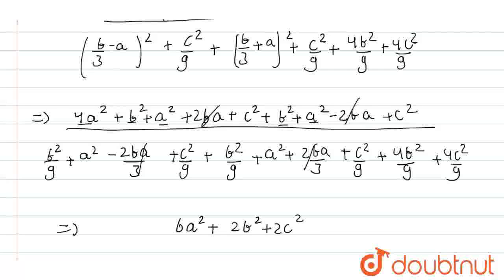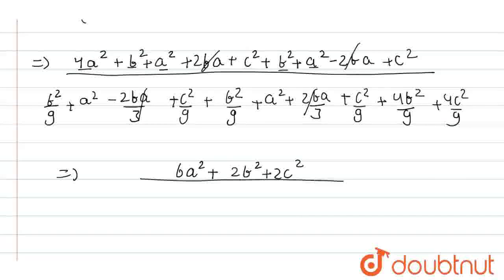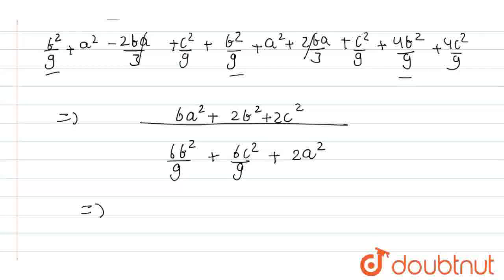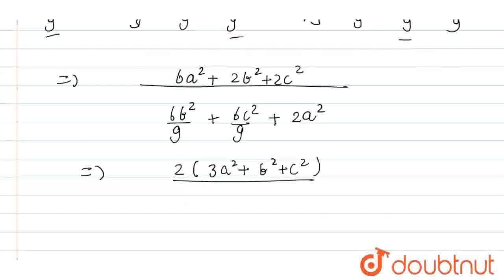Similarly expanding in the denominator: (b²/9 + a² − 2ba/3 + c²/9) + (b²/9 + a² + 2ba/3 + c²/9) + 4b²/9 + 4c²/9. The ±2ba/3 terms cancel. Collecting: b²/9 + b²/9 + 4b²/9 = 6b²/9, and c²/9 + c²/9 + 4c²/9 = 6c²/9, plus 2a². So the denominator is (6b²/9 + 6c²/9 + 2a²).